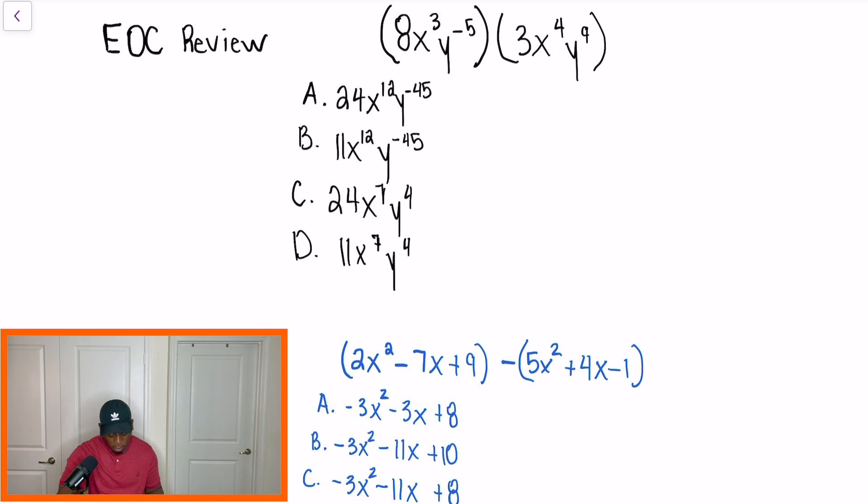So in the first problem, we're looking at properties of exponents, and we're going to go through this like it's a real test. What I'm going to do is I love to use process of elimination. When I look at the first problem, I know that we could automatically eliminate two answer choices, which are B and D. The reason why is we know that after we multiply 8 and 3, that's going to give us 24.